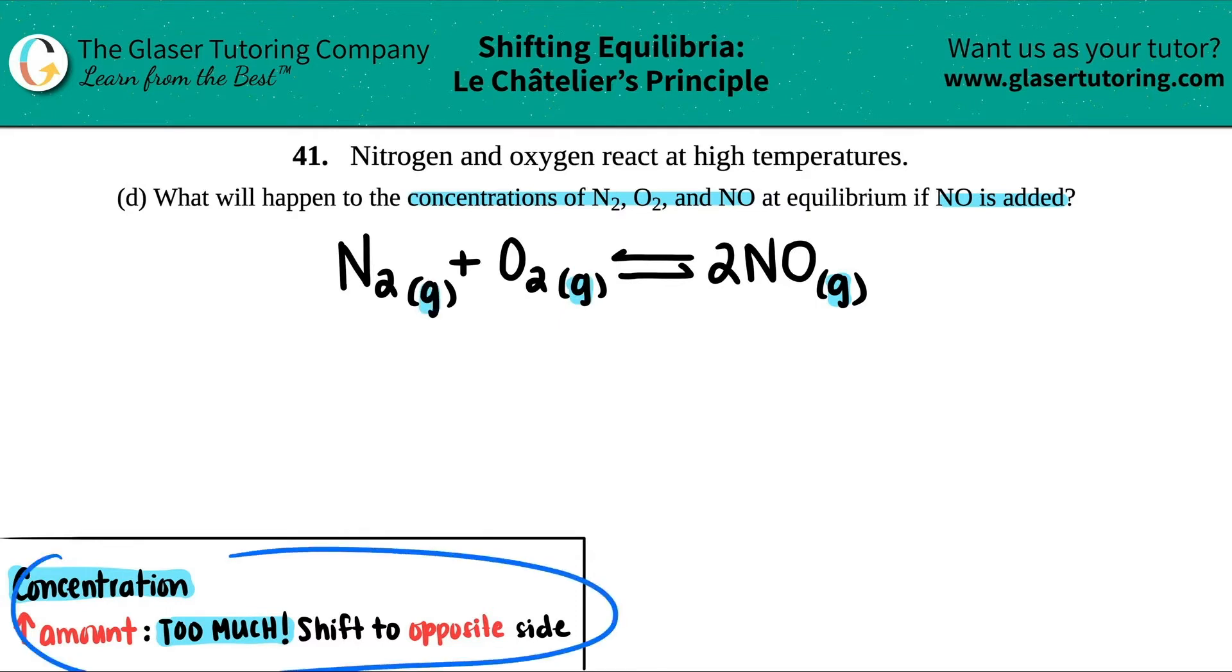Now I come down here. This is the information that we need to know. If you increase an amount of something, in this case we're adding NO, so I will put an arrow here, I'm increasing NO.